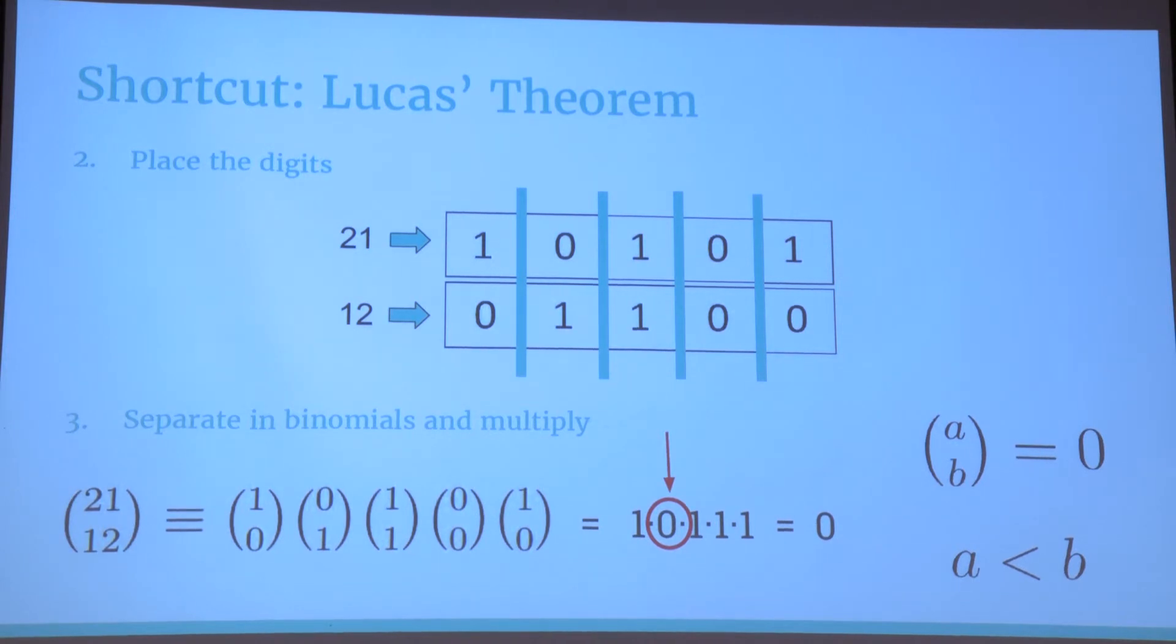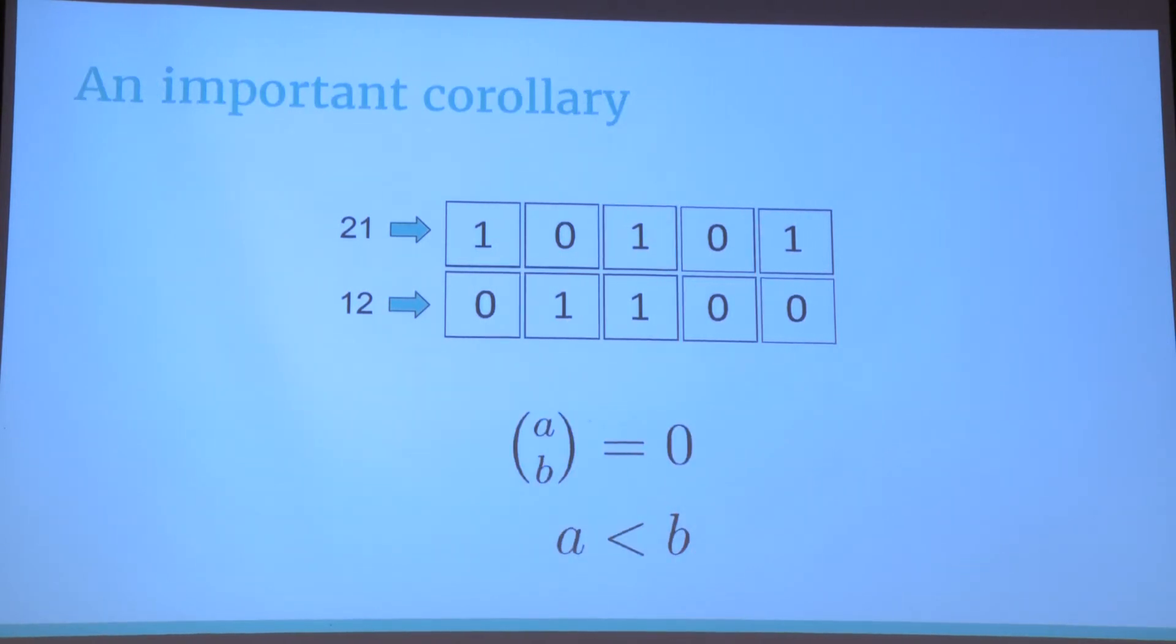For any positive values of a and b, the binomial coefficient a choose b is 0, if and only if b is strictly larger than a. This means that if the digit below is larger than the digit above, we get the remainder 0. This gives us an important corollary in Lucas' theorem, which is that if any of the digits below, which is the base p of k, is larger than the digit just above, then the binomial coefficient n choose k is divisible by p.